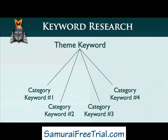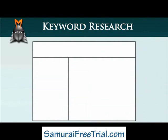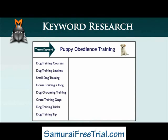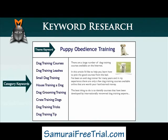For example, imagine that I decided to move ahead and create a dog training related website. Based on my data, I might choose puppy obedience training as my main theme keyword, and then use my other keywords as category keywords, as shown in this illustration. Within each of these categories, I would then write as many good quality articles as possible. The end result would be a content-rich website that specifically targets a set of thematically related keywords.